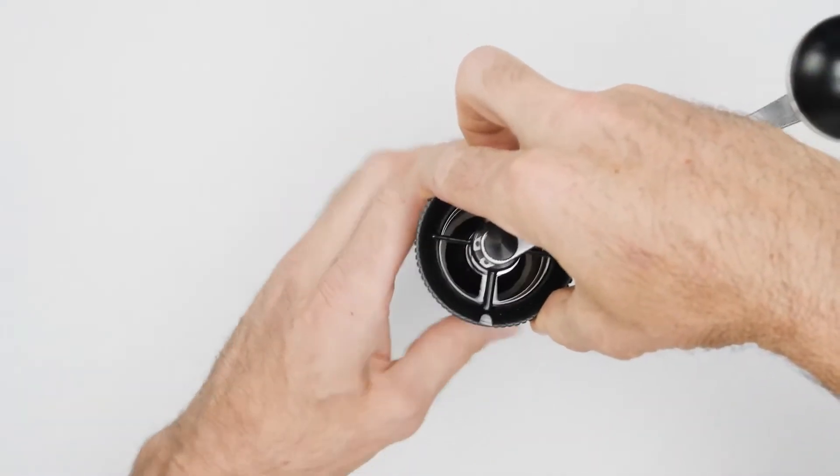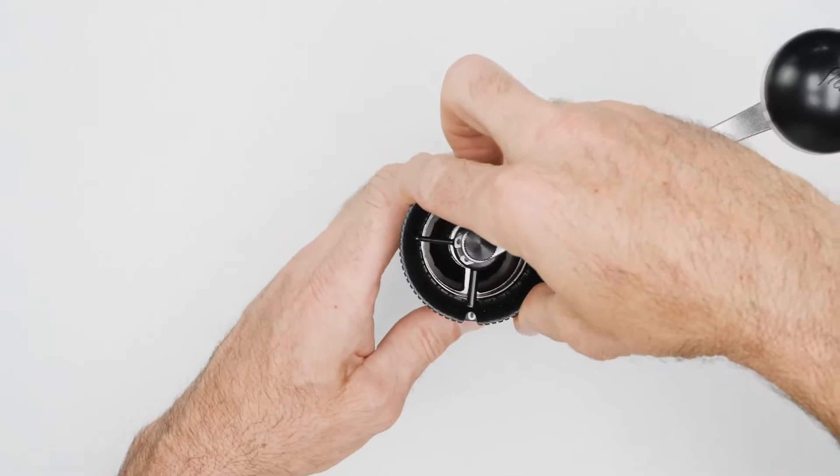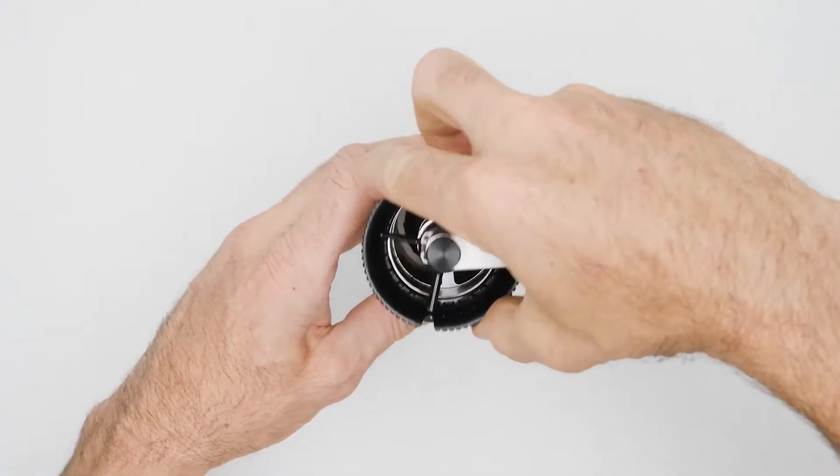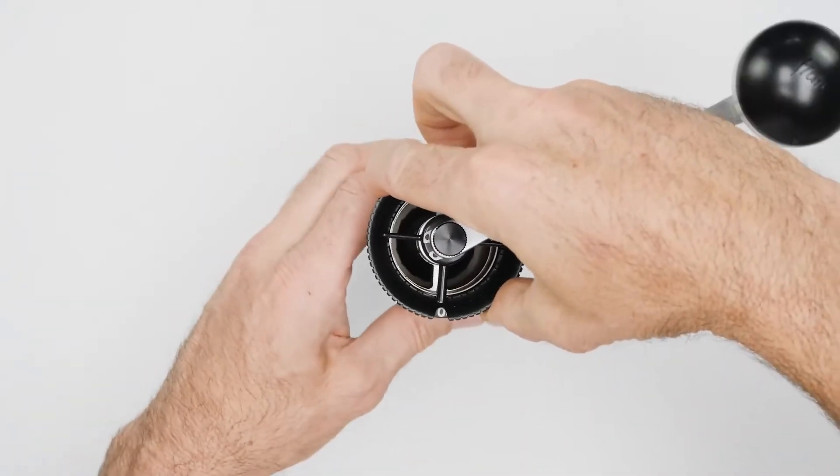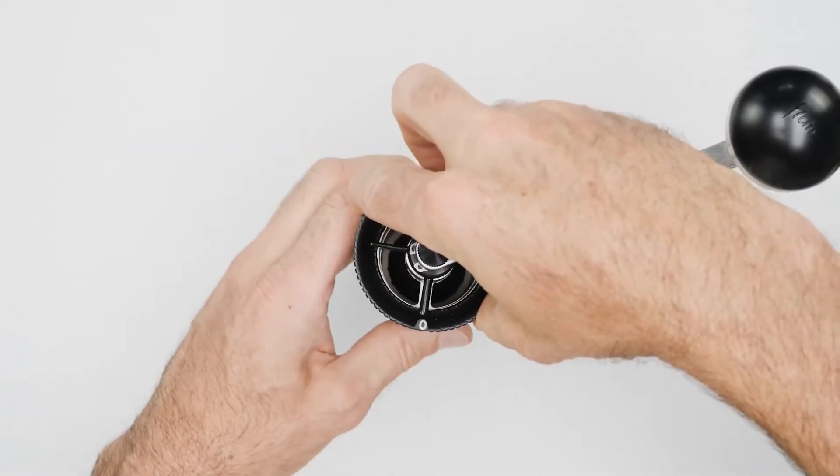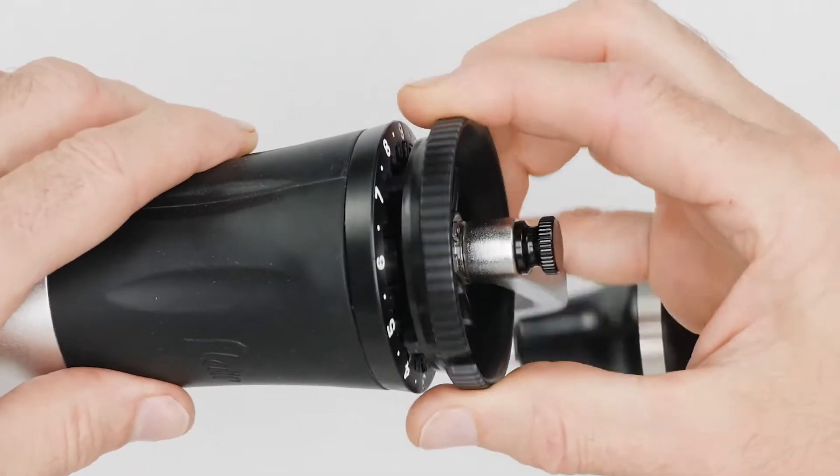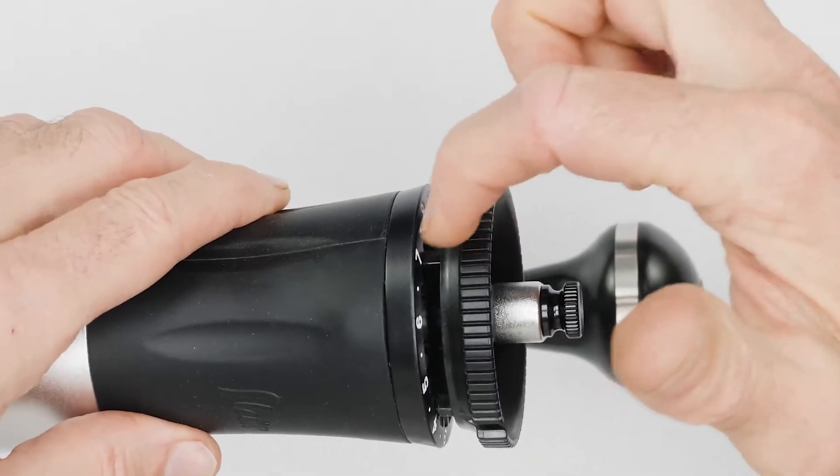The first full rotation from zero brings you to the twenty-fourth position. Two full rotations take you to the forty-eighth position. Three full rotations take you to the seventy-second position. Past here, the two parts will begin to rub on one another.